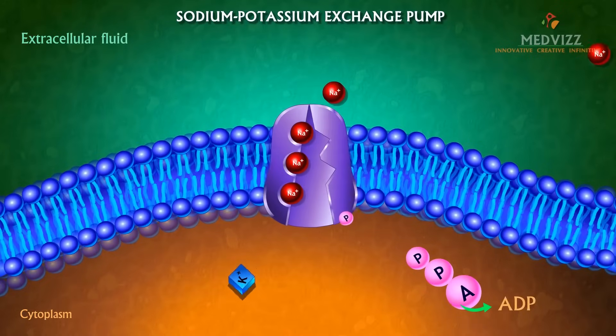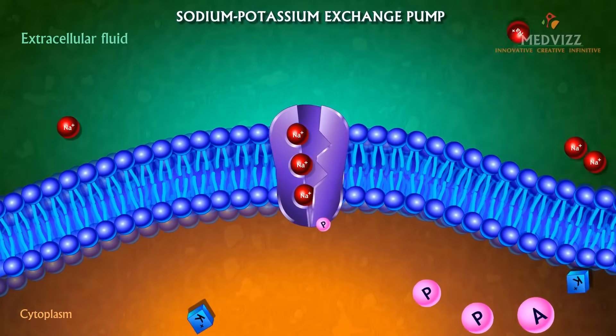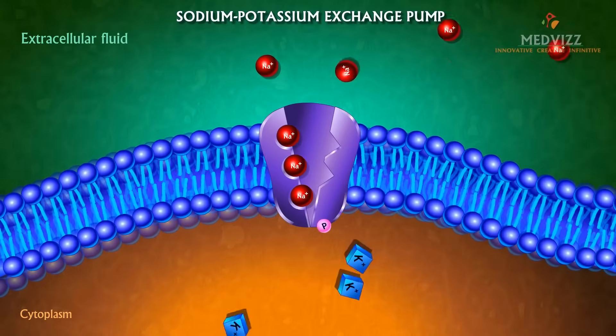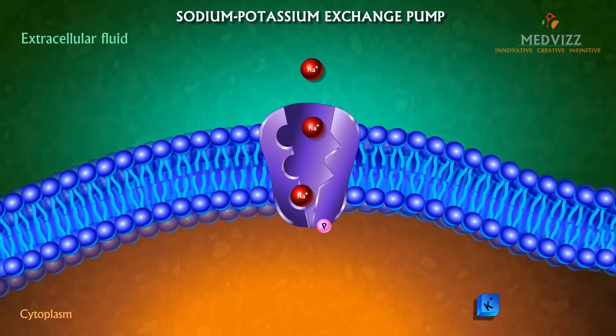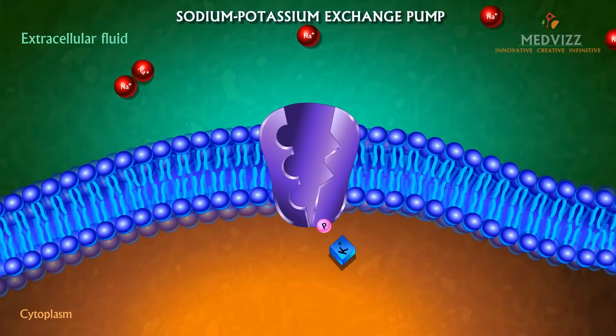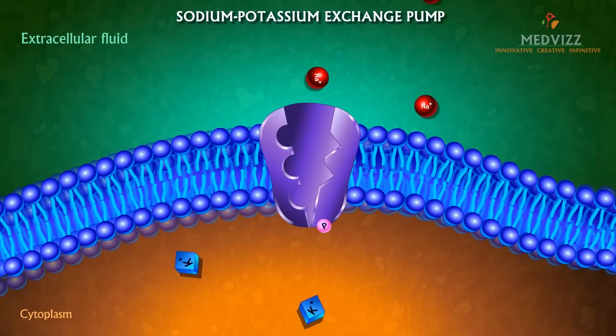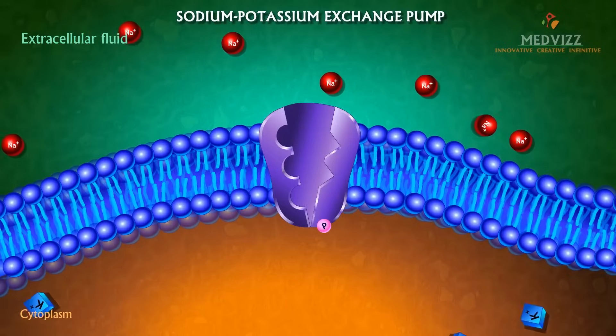The phosphorylation induces a second conformational change that translocates the three sodium ions across the membrane. In this new conformation the protein has a low affinity for sodium ions and the three bound sodium ions dissociate from the protein and diffuse into the extracellular fluid.